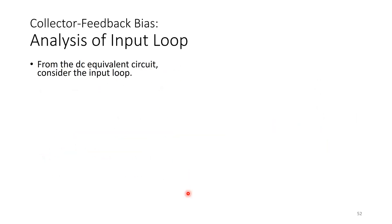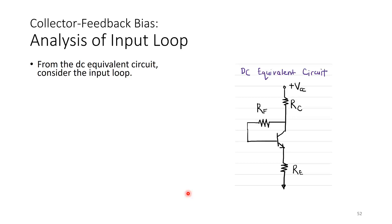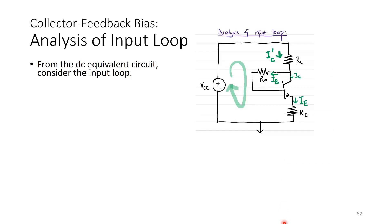Analysis of the input loop follows the same flow as the previous three configurations. We first draw the DC equivalent circuit. The DC equivalent circuit includes VCC, RC, RF, and RE. From the DC equivalent circuit, we consider the input loop with RC, RF, and RE. I have drawn VC as a voltage source to trace the KVL loop more clearly, noting the voltage drops across RC, RF, RE, and VBE.